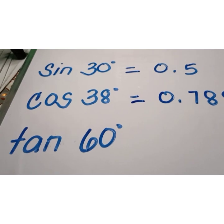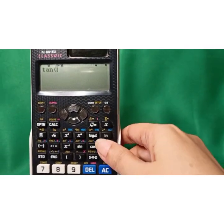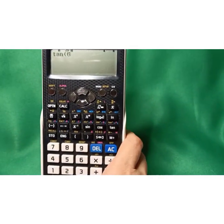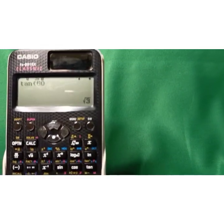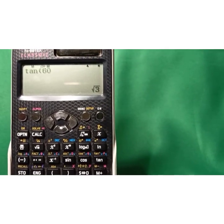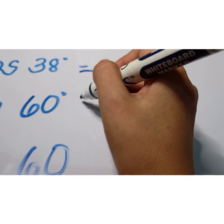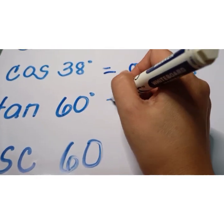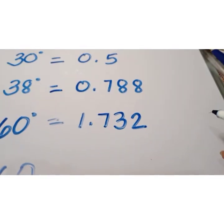The next one is tangent 60 degrees. Press the tangent function, then press 60. We have tangent 60 — press the equal sign. In our special right triangle, we also obtain square root of 3 here. Press the S to D function and we get 1.732. So tangent 60 is equal to 1.732.